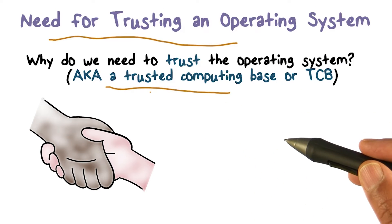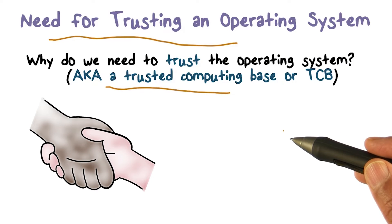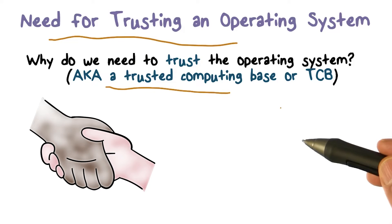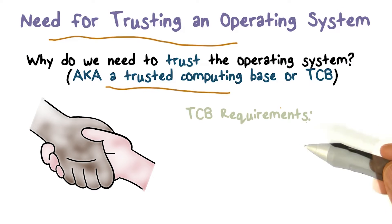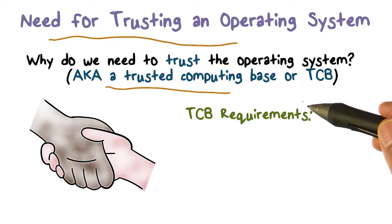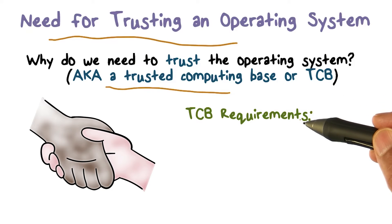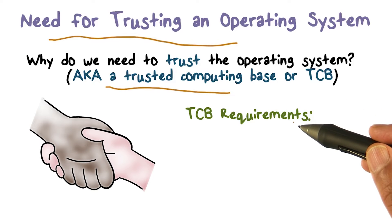If you're going to make someone the in-charge or the controller, you better be able to trust it to do what it's supposed to do. Otherwise, the results you're going to have, you will not like them. So what exactly does it mean for us to trust the operating system? What are the requirements that should be met by this trusted computing base that has such an important role in protecting our resources?